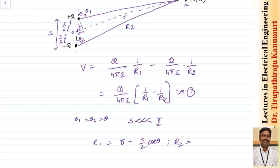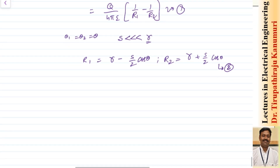Similarly, I can write my value of R2. R2 means projecting in this direction: this is nothing but R plus S by 2 cos theta, because this extra term is S by 2 cos theta 2. We are assuming that theta 2 is equal to theta 1 is equal to theta, so it becomes S by 2 cos theta. Let us take it as equation number 2.